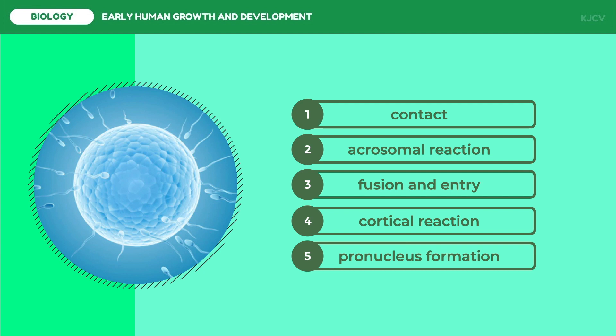Usually only one egg cell is fertilized. However, there are cases in which multiple eggs are released from each ovary, leading to fraternal multiple births. Fraternal fertilization leads to babies that do not look exactly the same.